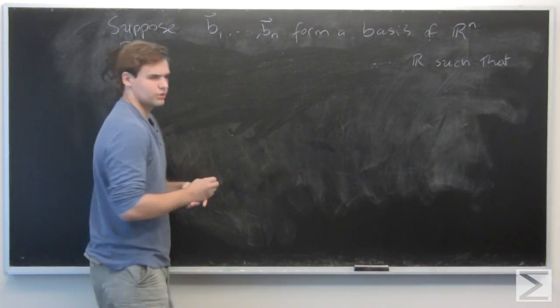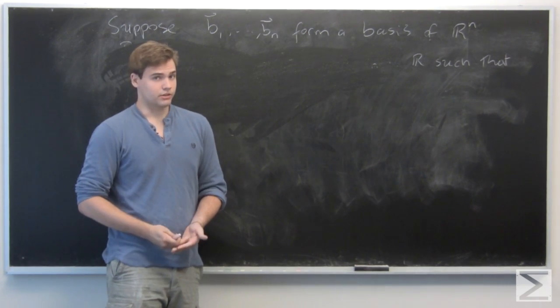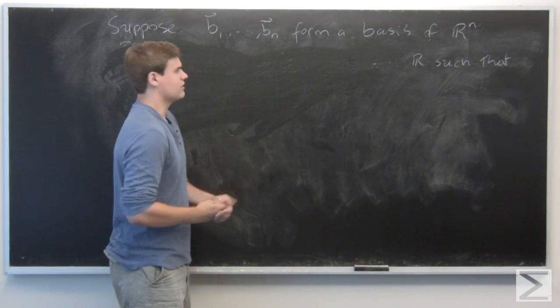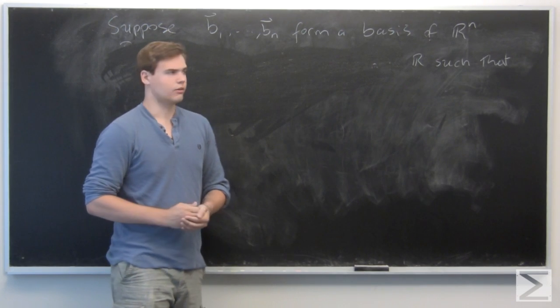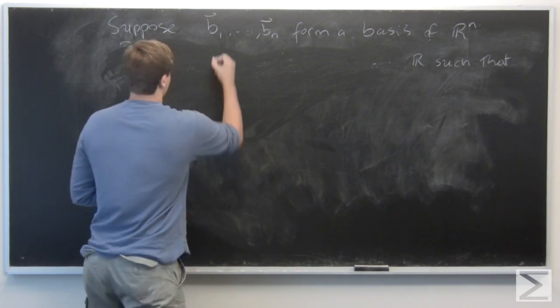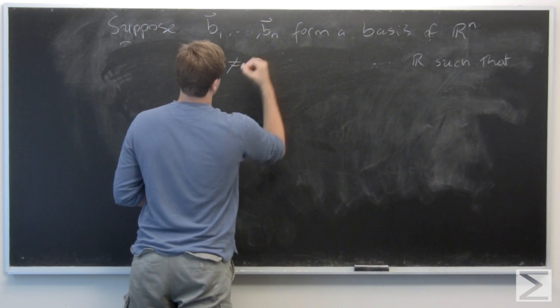So that means, without loss of generality, at least one of them is non-zero. And to simplify the method of proof, we can just assume the first one is non-zero. The case is really the same thing if you choose any one of them. So we assume T₁ is not equal to 0.